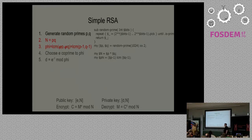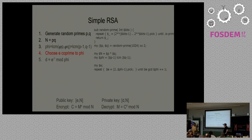Perl 6 has LCM — the least common multiple — built in. To choose an E, there's a different way to do this: you can just pick an E that's co-prime. You go ahead and pick a random one, and we get to use our GCD function. Our pick just says give me a random value from that range, and we do it until it's co-prime.